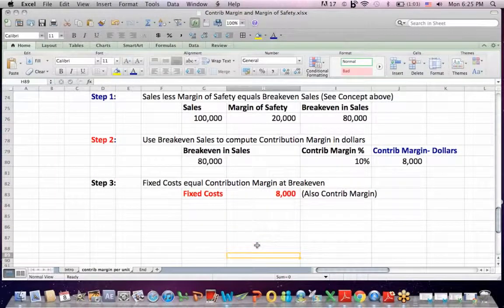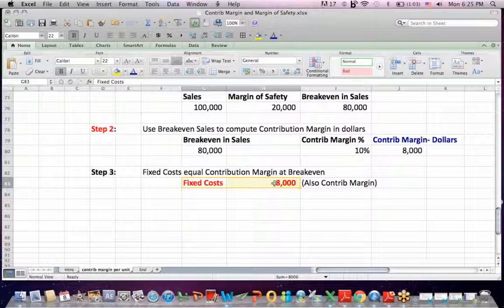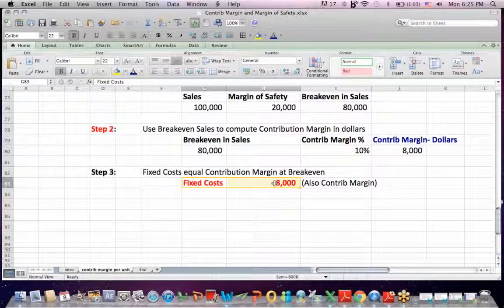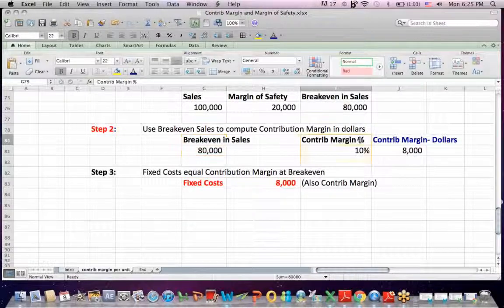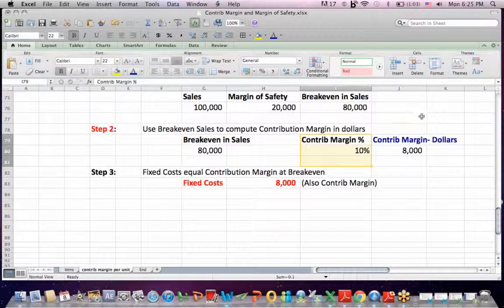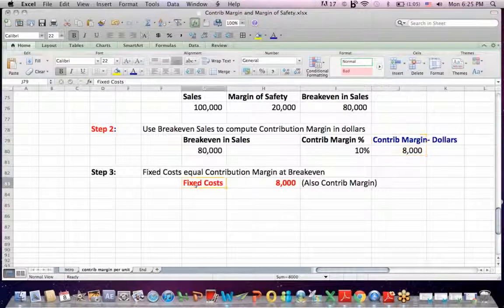I took break even in sales and figured out the contribution margin. And if I know the contribution margin in dollars here, I know my fixed cost in dollars because they have to equal each other because at break even, I have a zero profit. That's why I use break even in sales to calculate the contribution margin. Because that allowed me to say, if my contribution margin is $8,000, I know my fixed costs have to be $8,000.